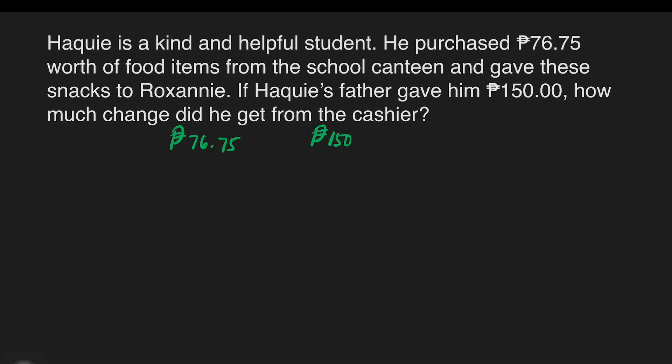We will subtract 76 pesos and 75 centavos from 150 pesos. So let's now go to the subtraction of these numbers. Let's have first 150 pesos. We can put a decimal point and two zeros here. We call this our Minuend.